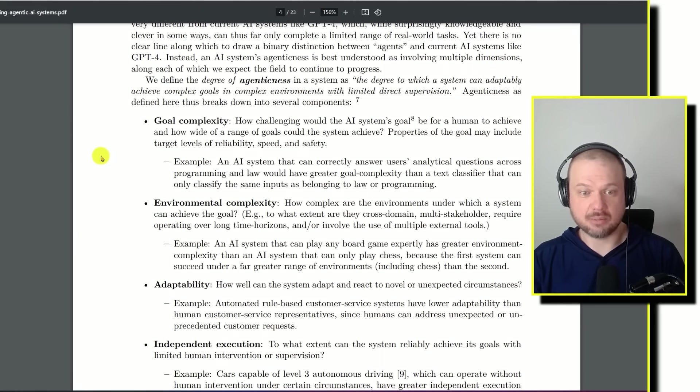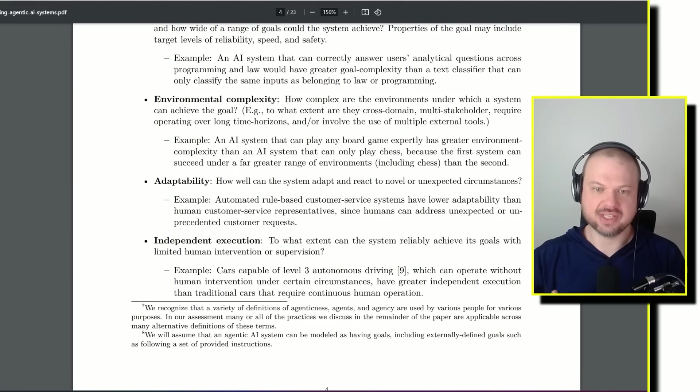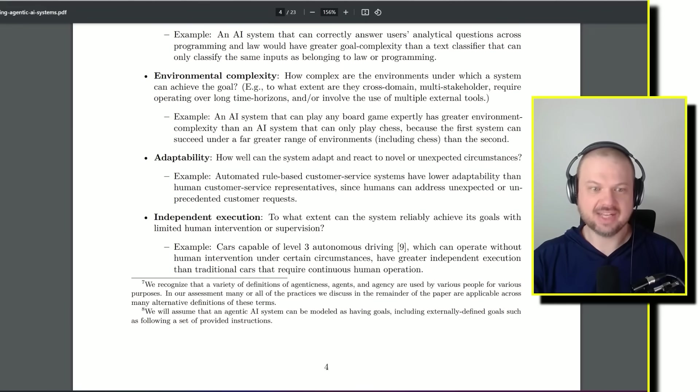Goal complexity. Environmental complexity. So for example, to what extent are they cross-domain, multi-stakeholder, require operating over long time horizons, and involve the use of multiple external tools. Then adaptability, how well can the system adapt and react to novel or unexpected circumstances. And independent execution, to what extent can the system reliably achieve its goals with limited human intervention or supervision.